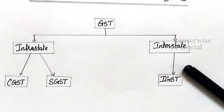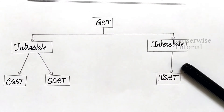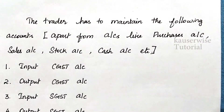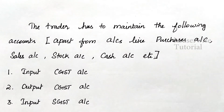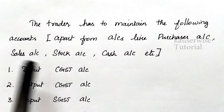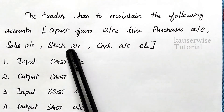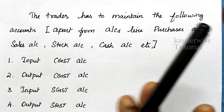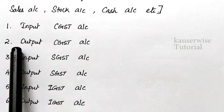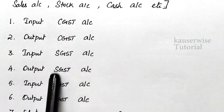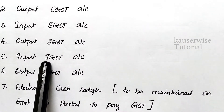Now let us see the accounting part of GST. All organizations and traders involved in goods and service transactions must maintain certain important accounts apart from their regular accounts like purchase, sales, cash, and stock accounts. The important GST ledgers to maintain are: Input CGST account, Output CGST account, Input SGST account, Output SGST account, Input IGST account, and Output IGST account.